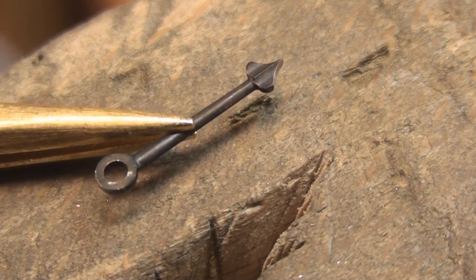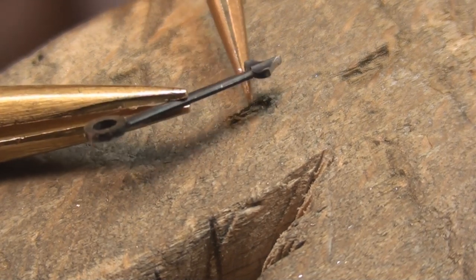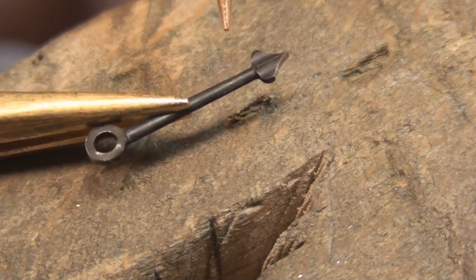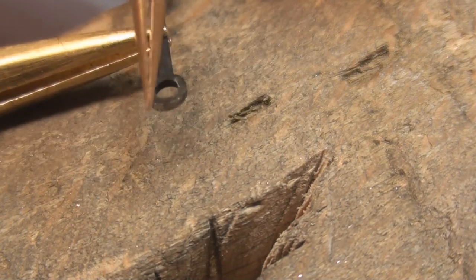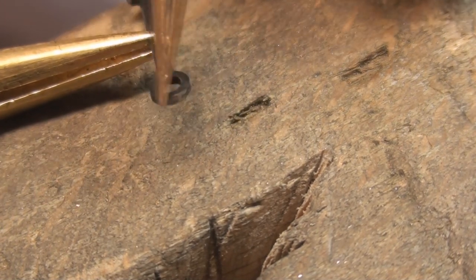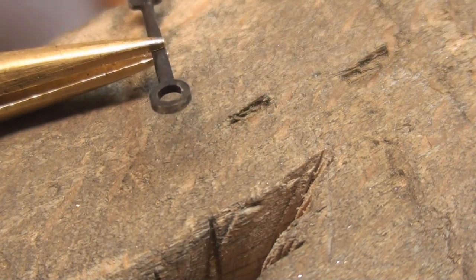So now we have the hand finished, and what we have just done is to remove all the rough edges around the scalloped tip here, and then also around the back of the boss for the hand.